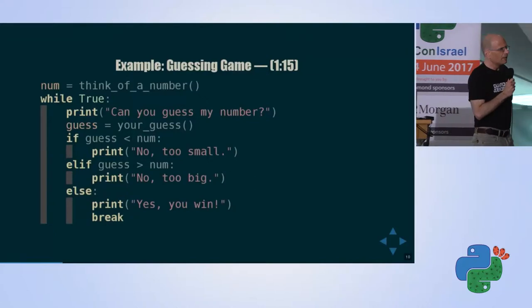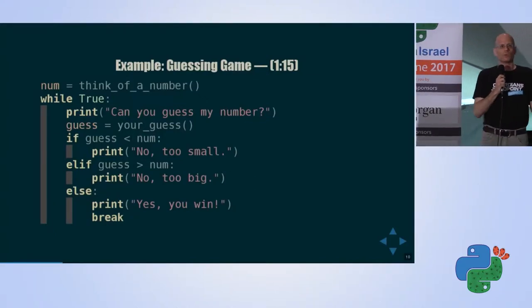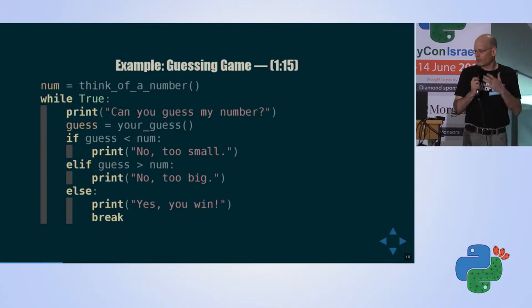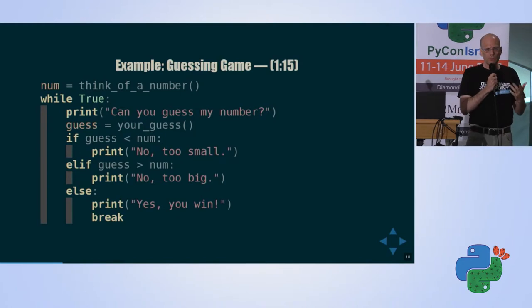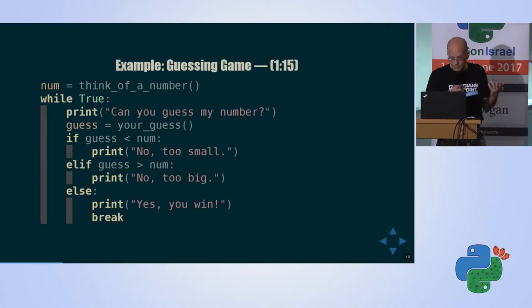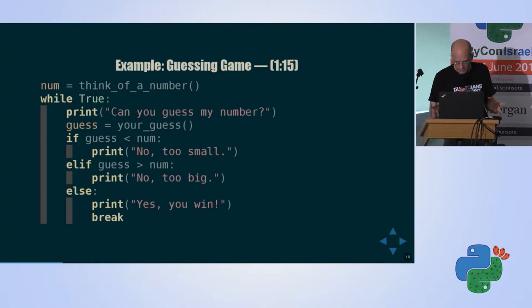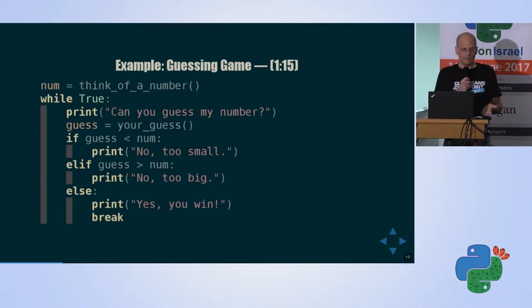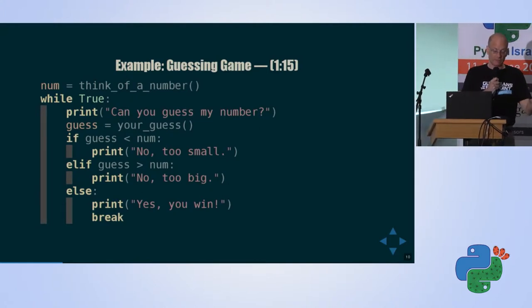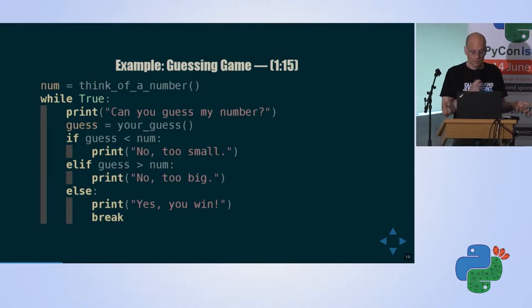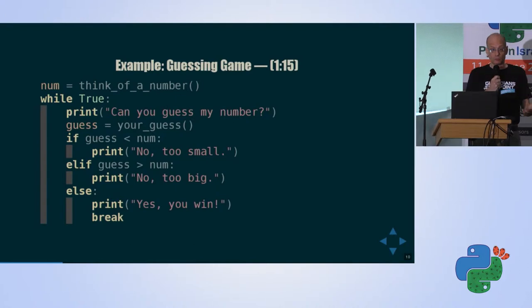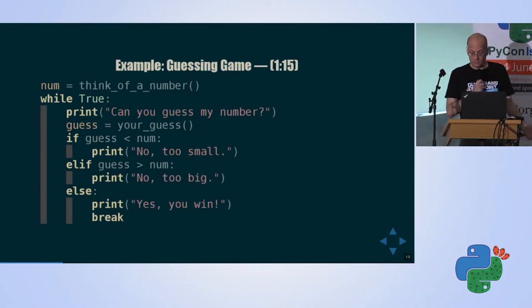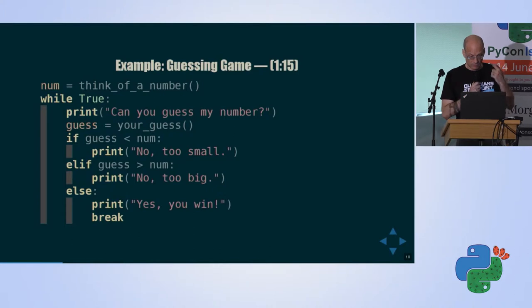Let me give you an example: the guessing game. If you wrote any sort of code, you must have written something like this. What this thing does: it picks a random number, prompts the user for a number. If this number is too small, you say to the player 'this is too small.' If the number is too big, you say 'this is too big.' And if it's just right, the player wins. Well, this is not easy to test. It doesn't get a value. It doesn't return a value. And our program is even more complicated than that — it is the enterprise version.